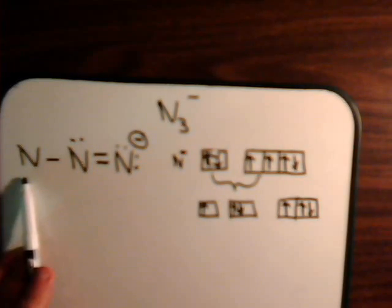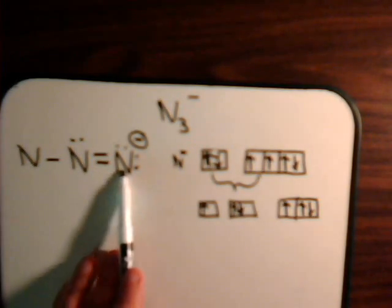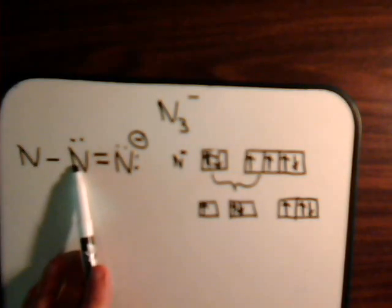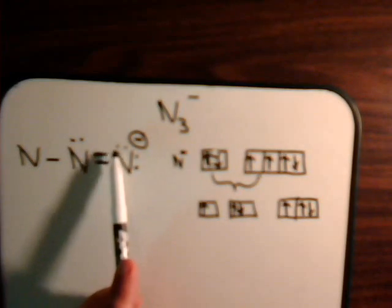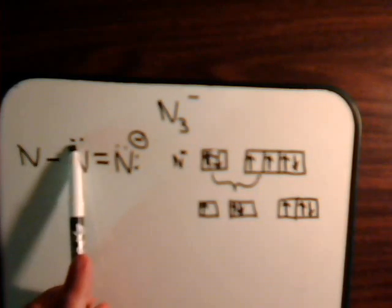This nitrogen also has an unshared pair of SP electrons. The central nitrogen had an SP orbital here and an SP orbital here — these SP orbitals overlap to form a sigma bond. The single P orbital electron on each nitrogen forms the pi bond, and each of these has a lone pair of pi electrons. This is like an intermediate structure; we now have to work with the third nitrogen atom.